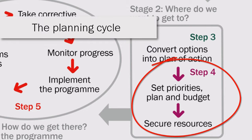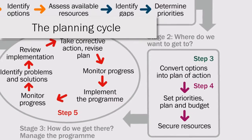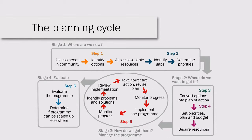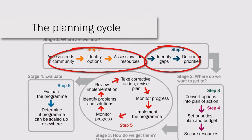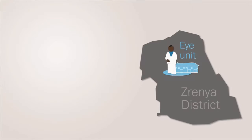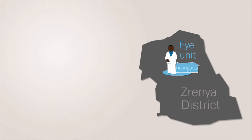In this session we will be discussing step 4 of the planning cycle. It is important that a plan's aims and objectives have already been agreed and prioritized before any practical decisions on time and money are made. Let's look at an example.